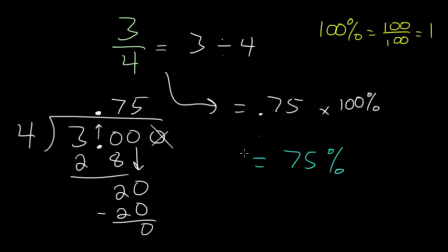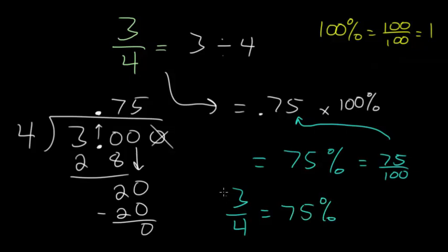And this answer should make sense, because 75% is just 75 divided by 100, which we know is 75 hundredths, written as a decimal. So, in essence, we found that this 3 fourths is the same thing as 75%. But the process is a little bit tedious. And for especially difficult fractions, this is fairly complicated.